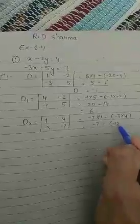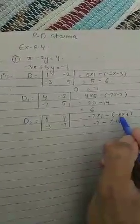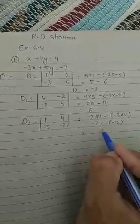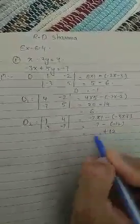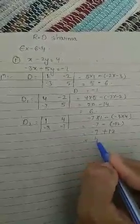So minus 12 because minus times plus is minus. So minus 12, minus minus plus 12 and minus 7. Now D2 is equal to 5.